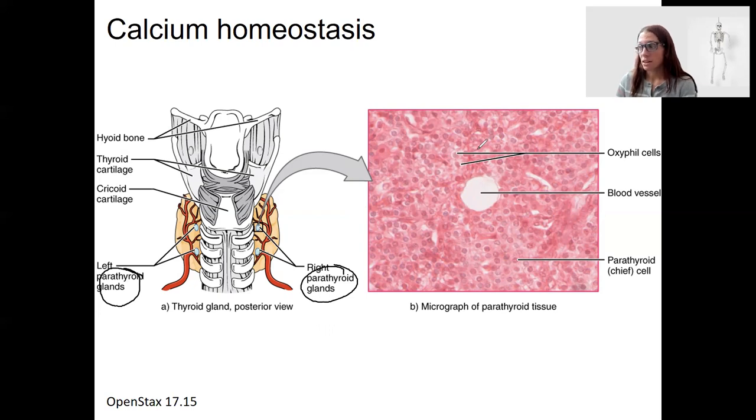So this is the detector, the sensor or receptor, and then the integrator or control center that's going to detect low calcium and then send a signal to those target organs. So the parathyroid glands are going to release parathyroid hormone, PTH, that is a hormonal signal that is going to target the intestine, kidney, or bone.